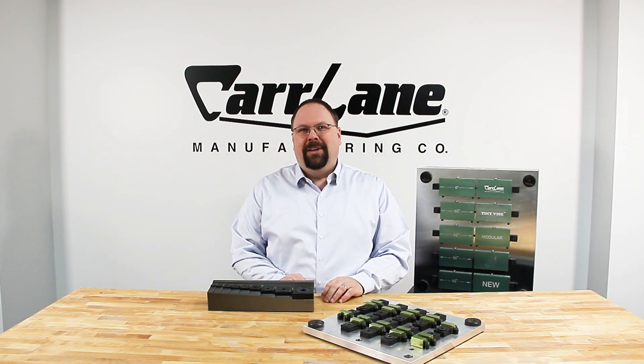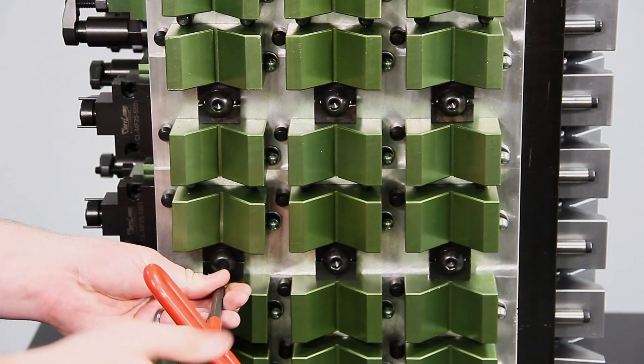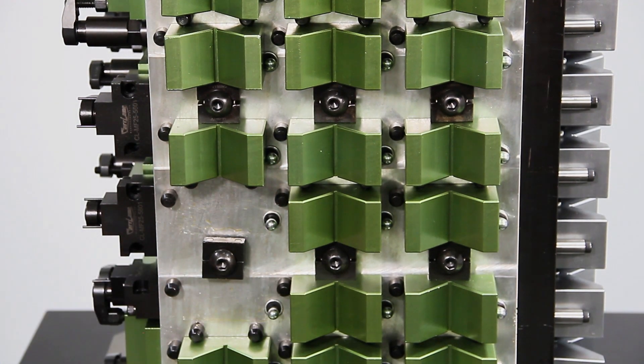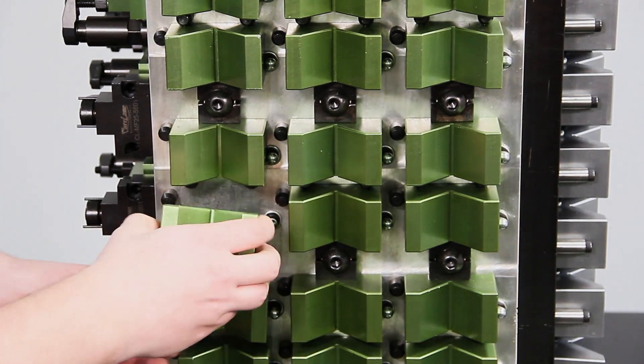Hi, I'm Colin, and today we're going to talk about the tiny vise. The tiny vise is a family of edge clamps that provide not only horizontal holding force against your workpiece but also downward clamping force.